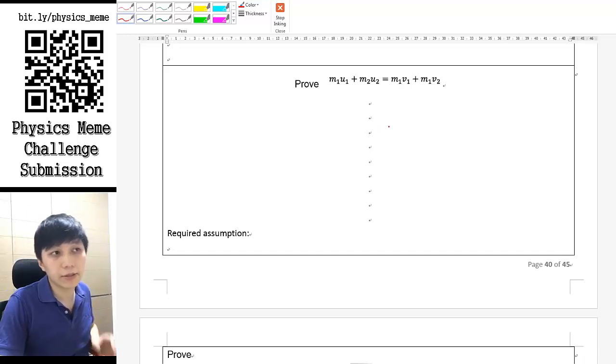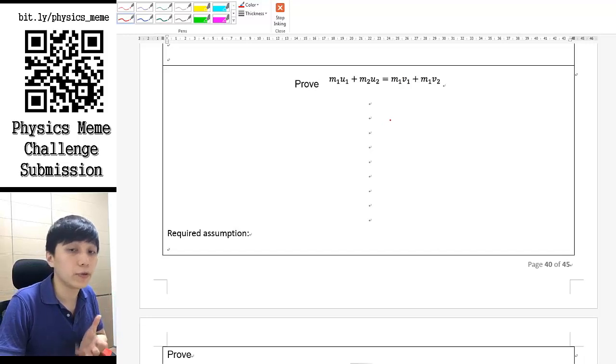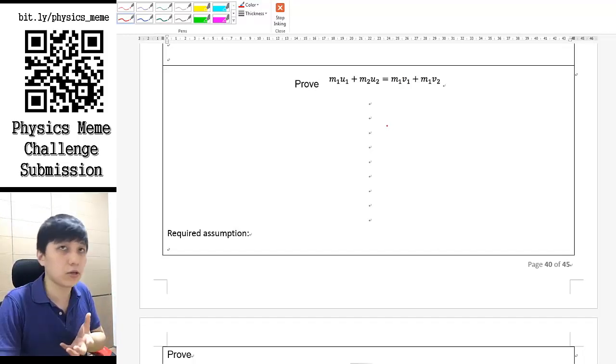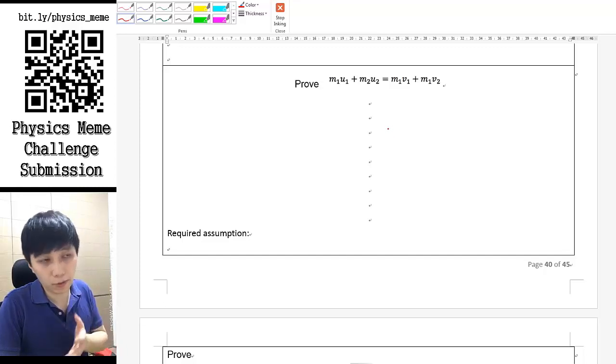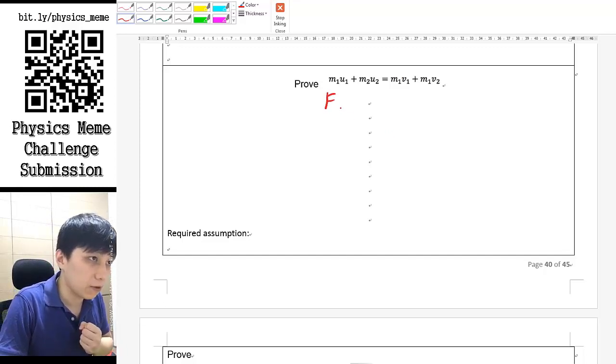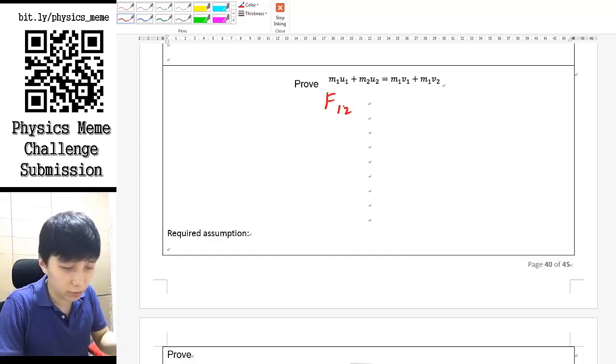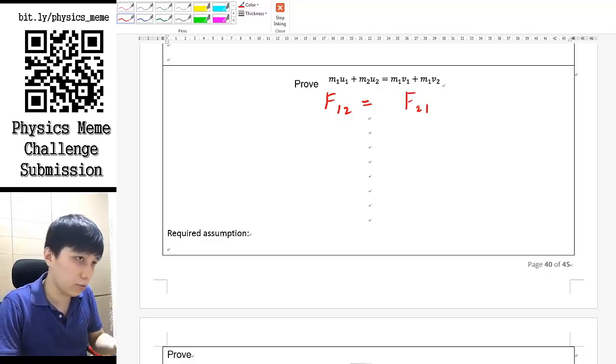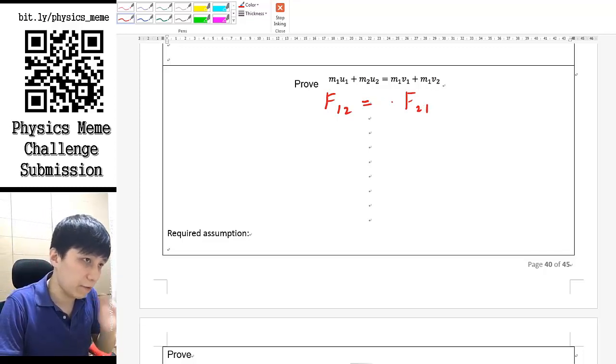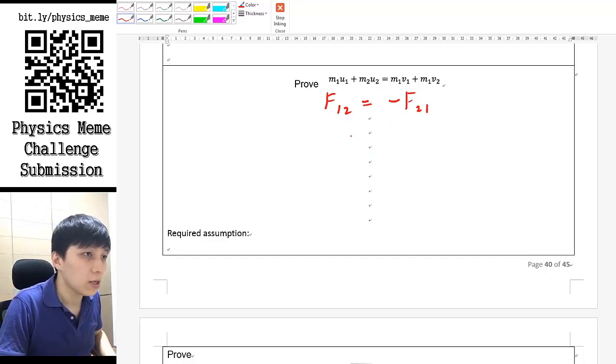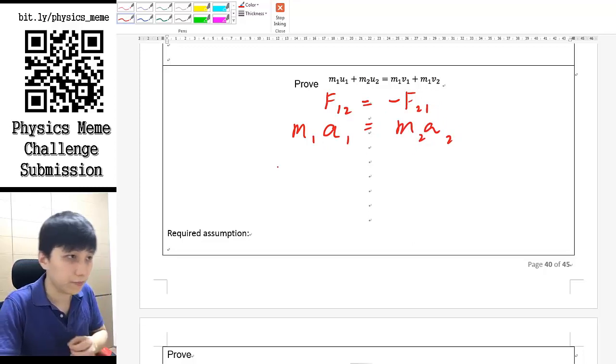For conservation of momentum, this equation is actually based on Newton's third law. According to Newton's third law, there's action and reaction pair for two forces, which the two forces will have the same magnitude but opposite direction. So if you have F_12, which is the force exerting on object 1 by 2, it should be the same magnitude to the force exerting on 2 by 1, but they are of opposite direction, so I should put a negative here. And so according to F equals to ma, then I can change it to ma for each of them.